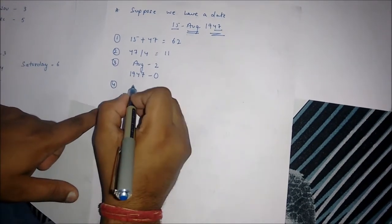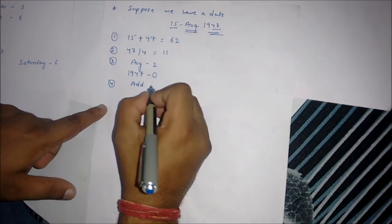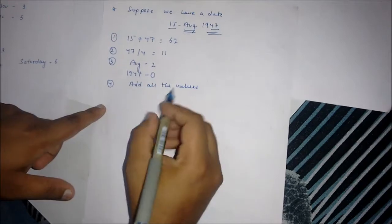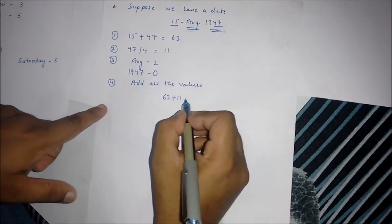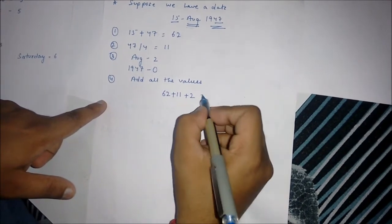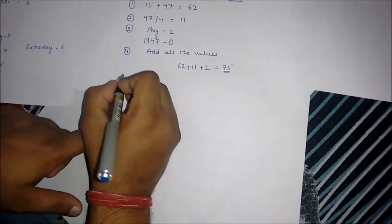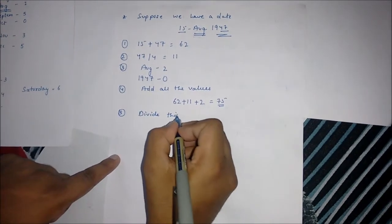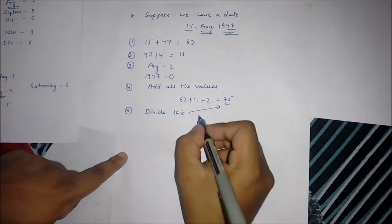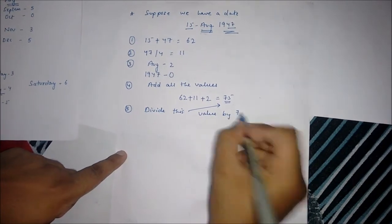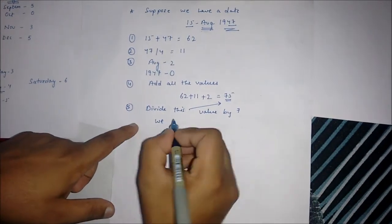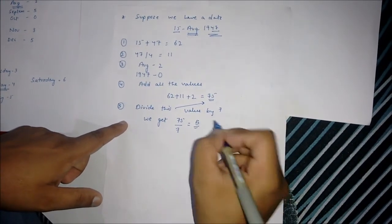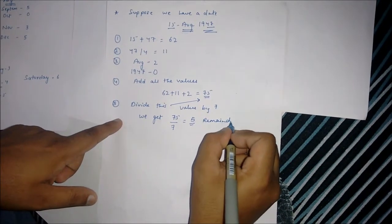Fourth step: add all the values. We get 75. Our final step is divide this value by 7. We get 5 as our remainder.